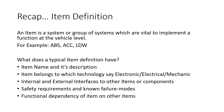What does a typical item definition contain? It will have the item name, such as ABS, and its description — its major functionality. An item belongs to a technology category: whether it is an electronic, electrical, or mechanical item. It will also have internal and external interfaces, its communication and control relationships with other items or components, safety requirements, known failure modes, and the functional dependency of the item on other items.